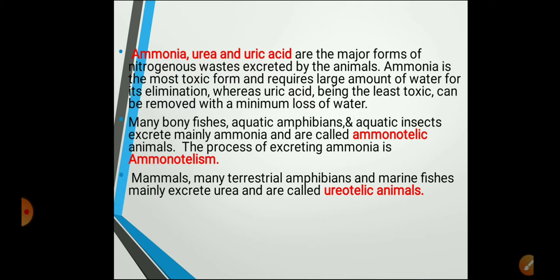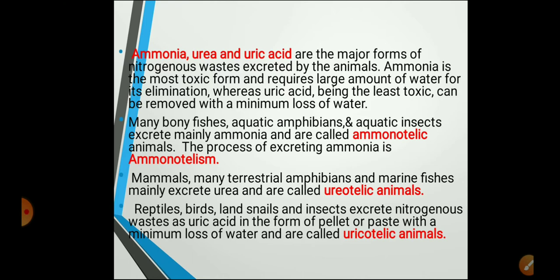Animals like mammals, terrestrial amphibians, and marine fishes have urea as their major excretory product — such animals are called ureotelic animals. The third group — birds, reptiles, land snails, and some insects — excrete uric acid in the form of a pellet or paste, and they are called uricotelic animals. These are the three different groups of animals based on the major excretory product.